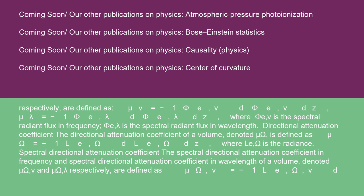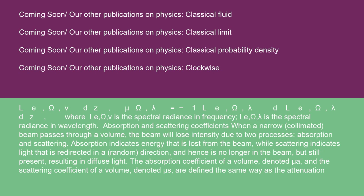The spectral directional attenuation coefficient in frequency and in wavelength of a volume, denoted μ_{Ω,ν} and μ_{Ω,λ} respectively, are defined as: μ_{Ω,ν} = −(1/L_{E,Ω,ν})(dL_{E,Ω,ν}/dz) and μ_{Ω,λ} = −(1/L_{E,Ω,λ})(dL_{E,Ω,λ}/dz), where L_{E,Ω,ν} is the spectral radiance in frequency and L_{E,Ω,λ} is the spectral radiance in wavelength.